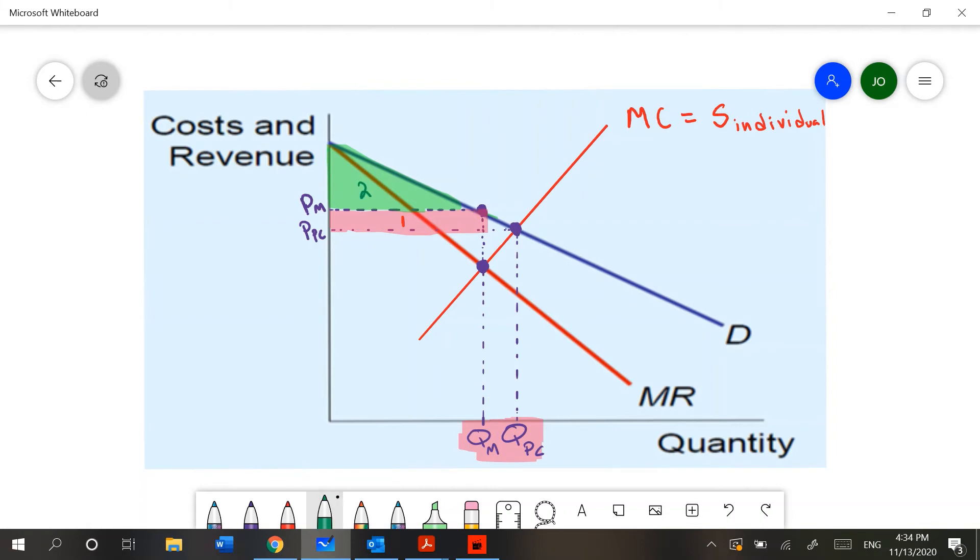The monopoly causes deadweight loss. Notice that our quantities are decreased. So that means that there are missing transactions. You can think of this as missing transactions that we would have if this market operated under perfect competition. We will get those transactions by subtracting QPC minus QM. And it is the horizontal distance between these two lines. Our deadweight loss will be represented by a triangular area shown here.